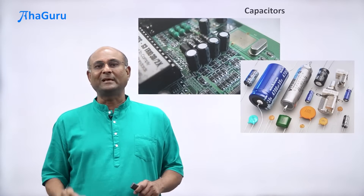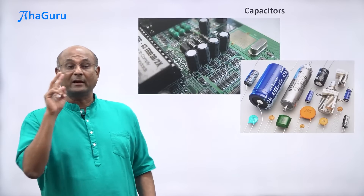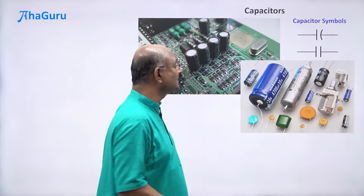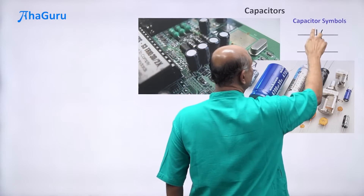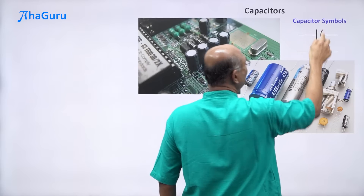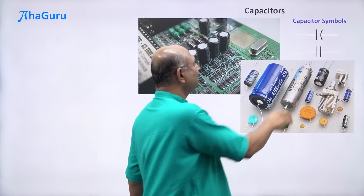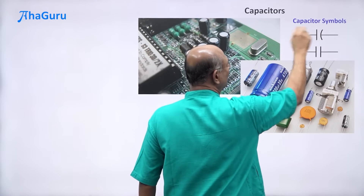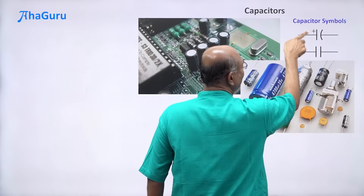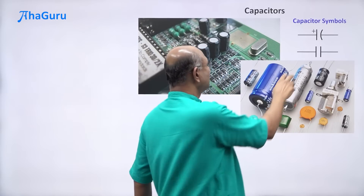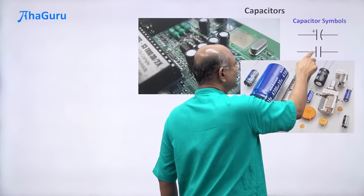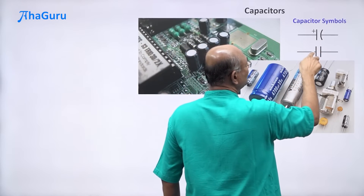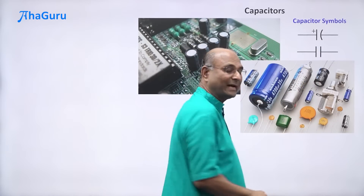Let us start with the symbol for a capacitor. There are two common symbols. One is basically two parallel lines. The other has this line and an arc. We are going to treat it as if it is the same as the first symbol, though there is a small difference. The second one is an electrolytic capacitor, so only the flat side can be positive. There is no such constraint on the first type — you can have either side positive or negative.